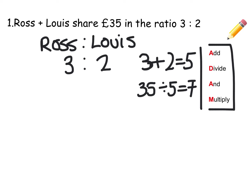And then finally we multiply by that number. We do 3 times 7 because Ross is getting 3 shares of 7, so Ross will get 21. And Louie will get 2 lots of 7, so Louie will get 14.